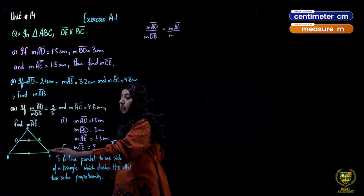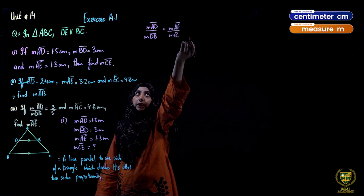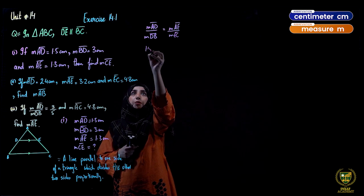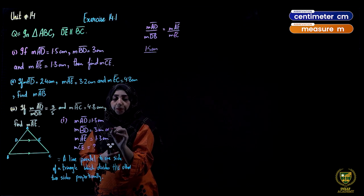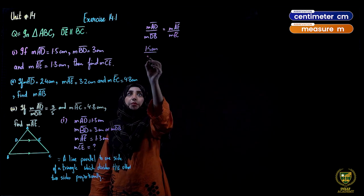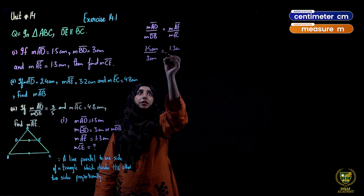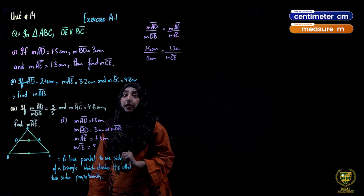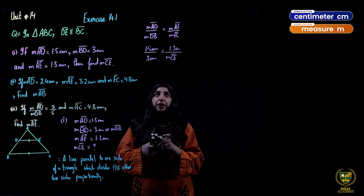We can write EC here. Now we put in the given values: AD = 1.5 cm, DB = 3 cm, AE = 1.3 cm, and CE is what we need to find. Now we do cross multiplication by cross multiplication.